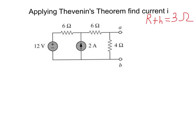The next step is to find Thevenin voltage VTH. We need to come back to our original circuit with the open circuit between A and B. The Thevenin voltage is the equivalent voltage between terminals A and B. Looking into the circuit, we can see that VTH is the same as the voltage across the 4 ohm resistor — across that branch.